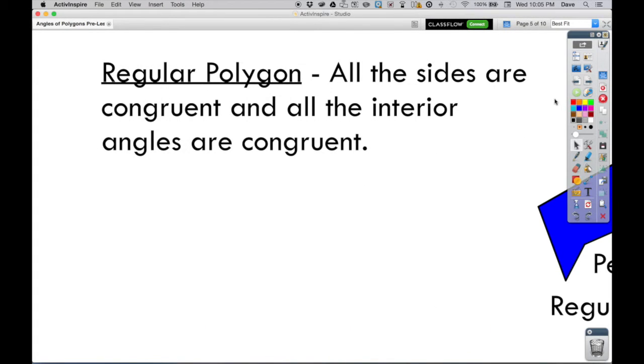Alright, something else you'll need to know going in. There's a difference between just a polygon and something called a regular polygon. What the regular part means is that whatever polygon you're looking at, all the sides are congruent and all the interior angles are congruent.